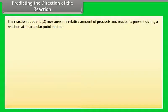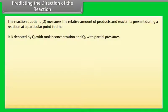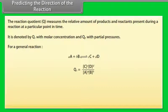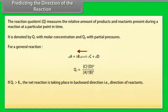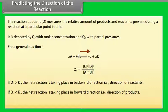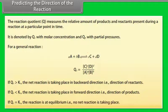Predicting the Direction of a Reaction. The reaction quotient Q measures the relative amounts of products and reactants present during a reaction at a particular point in time — denoted QC with molar concentrations and QP with partial pressures. If QC > KC, the net reaction proceeds in the backward direction (toward reactants). If QC < KC, the net reaction proceeds in the forward direction (toward products). If QC = KC, the reaction is at equilibrium and no net reaction is taking place.